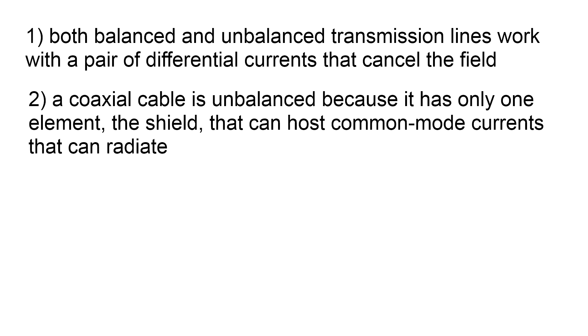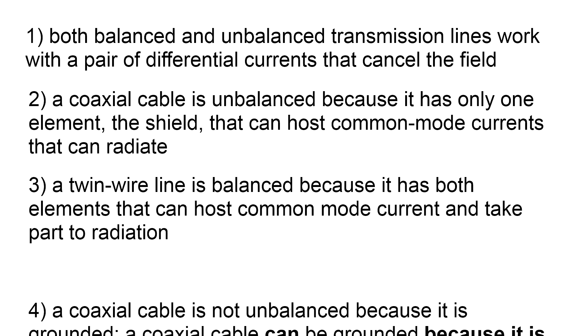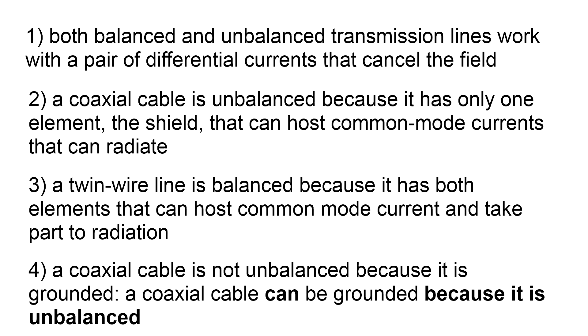In conclusion, both balanced and unbalanced transmission lines work with a pair of differential currents that cancel the field. A coaxial cable is unbalanced because it has only one element, the shield, that can host common-mode currents that can radiate. A twin wire line is balanced because it has both elements that can host common-mode currents and take part to radiation. A coaxial cable is not unbalanced because it is grounded. A coaxial cable can be grounded because it is unbalanced.